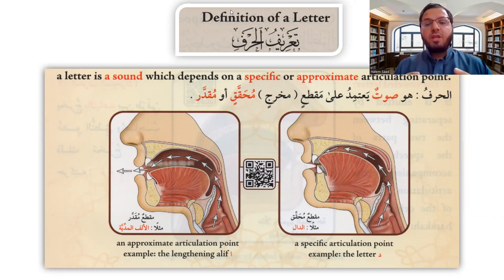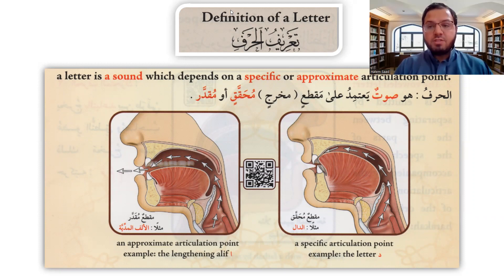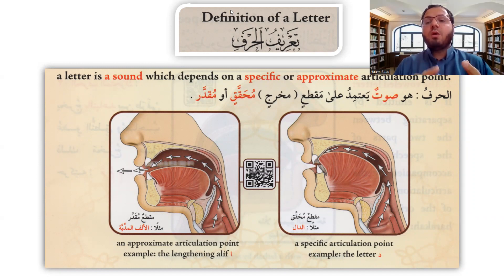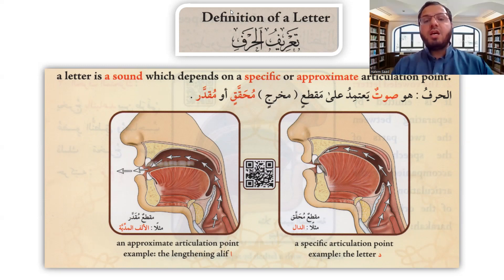You have some specific articulation points and some specific sounds that come from a specific articulation point, and some approximate or estimated articulation points. Estimated articulation points include al-alif, al-waw, and al-ya al-maddiyya — the lengthened alif, waw, and ya. However, all other letters have specific articulation points.